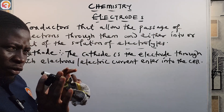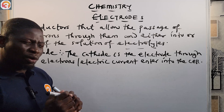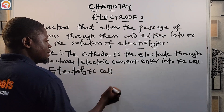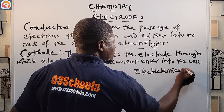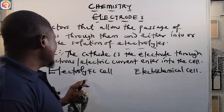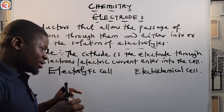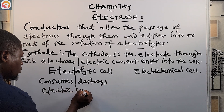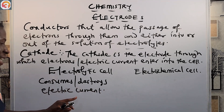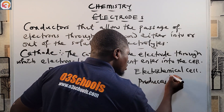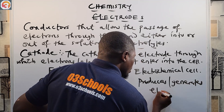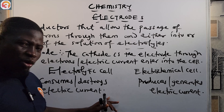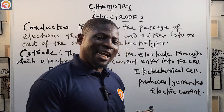We have two types of cells to look at during our study of electrolysis: the electrolytic cell and the electrochemical cell. The electrolytic cell consumes or destroys electric current, while the electrochemical cell produces or generates electric current.